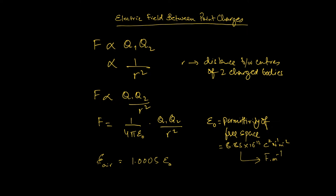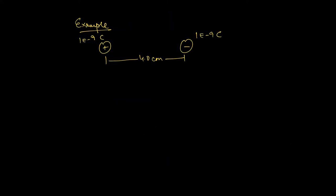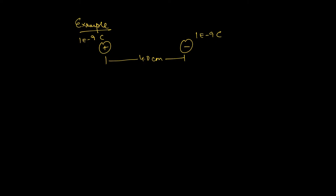Let's work through an example. Say you have two point charges — one is positive, one is negative — so there's going to be some kind of attractive force between these charges. Each of these charges has a magnitude of 1.9 times 10 to the negative 9 coulombs. Obviously, the negative charge is going to have a negative sign in front of it. So what would be the force between these charges?